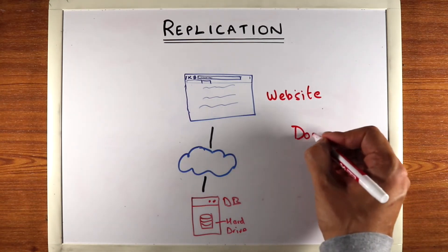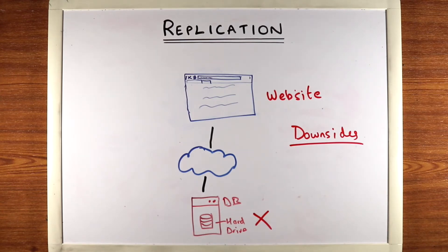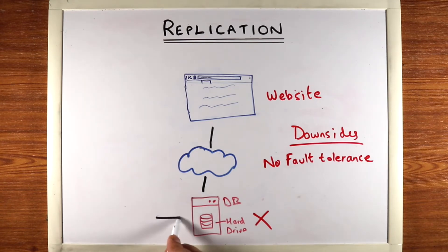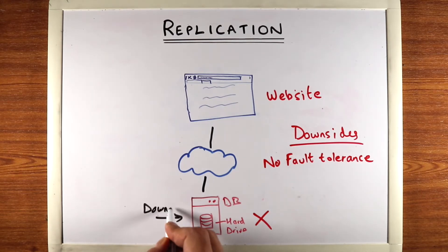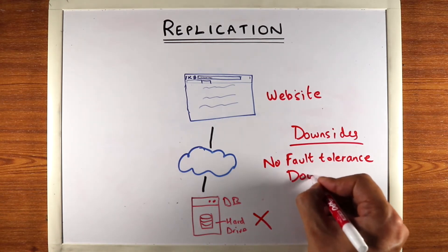Now in this simple setup, what are the downsides? A major downside is that if this hard drive goes down, or the machine fails or reboots, your website will stop serving — there is no fault tolerance. For example, if you have to do maintenance and reboot the database, the data will be unavailable, so there will be downtime on this website. Another downside is a high potential for downtime.